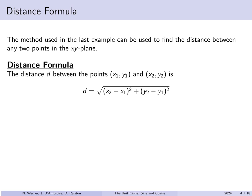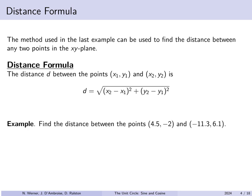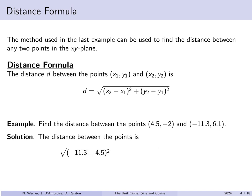For example, find the distance between the points 4.5 comma negative 2 and negative 11.3 comma 6.1. All we have to do is apply the formula. The distance is the square root of (negative 11.3 minus 4.5) squared plus (6.1 minus negative 2) squared. It doesn't really matter which one goes first or second — the only difference will be whether you have a positive or negative quantity inside those parentheses, but you're squaring it anyway. Plugging this into a calculator we would simply get the square root of 289.33.